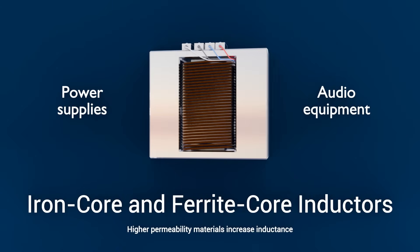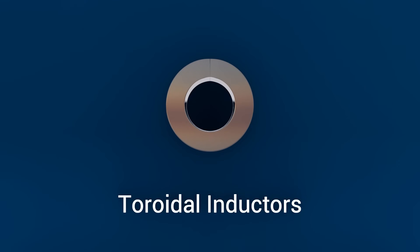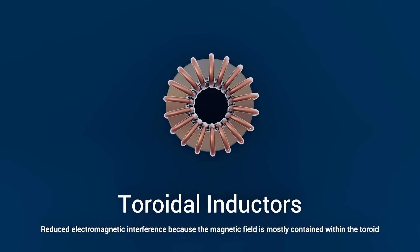Toroidal inductors. Donut-shaped core. Reduce electromagnetic interference because the magnetic field is mostly contained within the toroid.